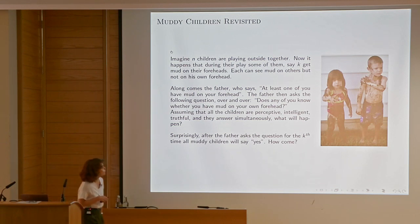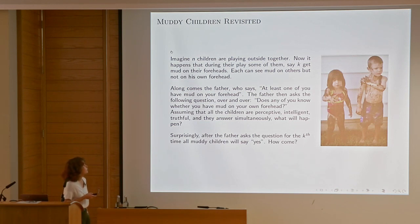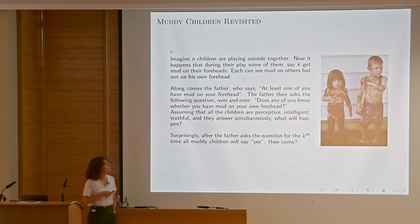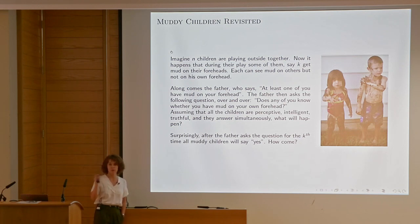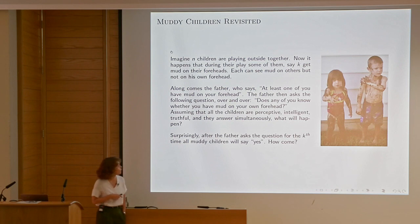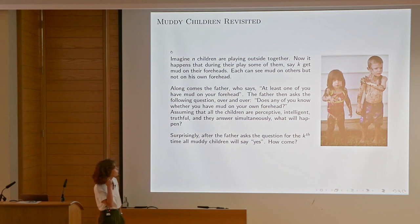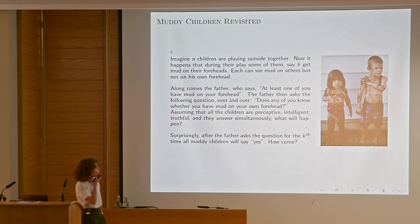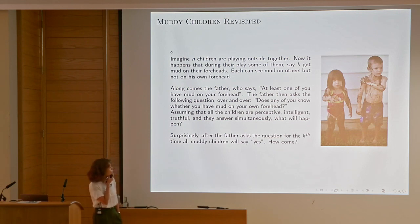Imagine n children playing outside. During their play, some of them — k of n — get mud on their foreheads. Each can see mud on others but not on their own forehead. Along comes the father and says, 'At least one of you has mud on your forehead.' The father then asks the following question over and over: 'Does any of you know whether you have mud on your forehead?' Assuming all the children are perceptive, intelligent, and truthful, and they answer simultaneously, what will happen?